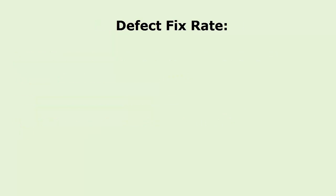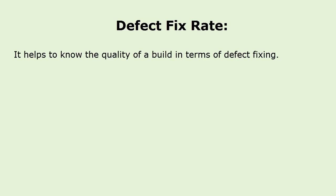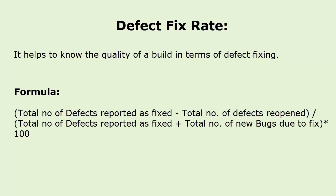Defect fix rate: it helps to know the quality of a build in terms of defect fixing. The formula is: (total number of defects reported as fixed minus total number of defects reopened) divided by (total number of defects reported as fixed plus total number of new bugs due to fix), multiplied by 100. Here goes an example on defect fix rate matrix.